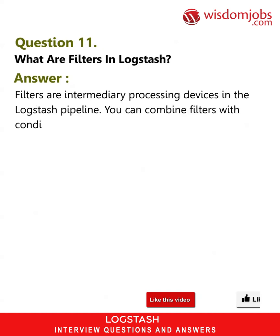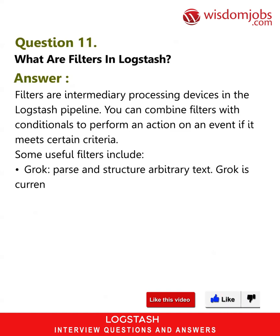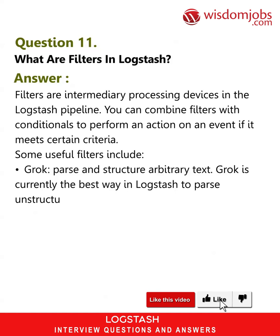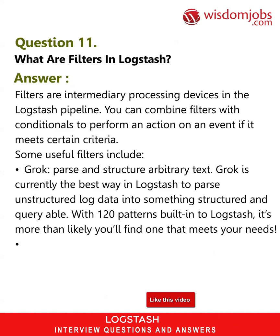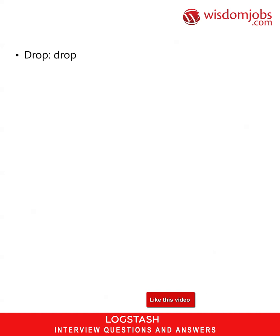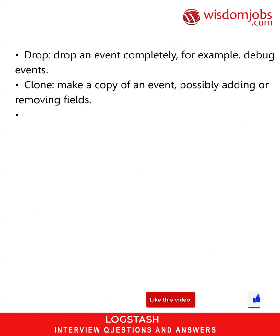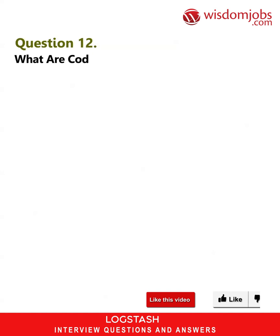Question 11: What are filters in Logstash? Answer: Filters are intermediary processing devices in the Logstash pipeline. You can combine filters with conditionals to perform an action on an event if it meets certain criteria. Some useful filters include: Grok — parse and structure arbitrary text; Mutate — perform general transformations on event fields (rename, remove, replace, and modify fields); Drop — drop an event completely, for example debug events; Clone — make a copy of an event, possibly adding or removing fields; GeoIP — add information about the geographical location of an IP.